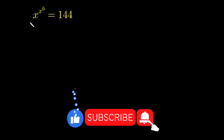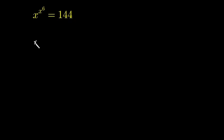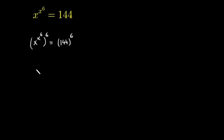In the next step I am going to multiply the exponent with 6 on both sides. So this equation can be written as x raised to the power x raised to the power 6, multiplying the exponent with 6 on both sides. This gives us x raised to the power x raised to the power 6 times 6.